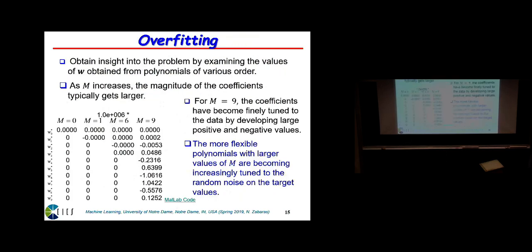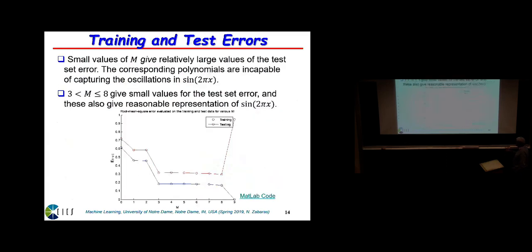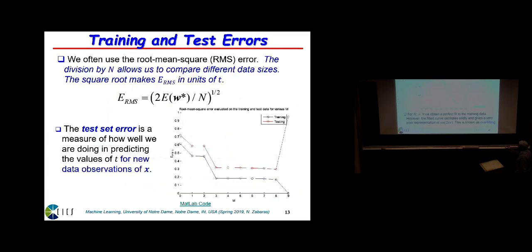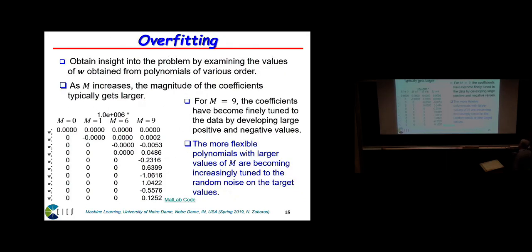Another observable problem: when you use higher-order polynomials with least squares, the coefficients w start oscillating between very high positive numbers and very low negative values — multiplied here by 10^6. This oscillation is why the fit goes up and down wildly. This is a fundamental problem related to overfitting and maximum likelihood estimation: you end up fitting the noise of the data rather than the data itself.